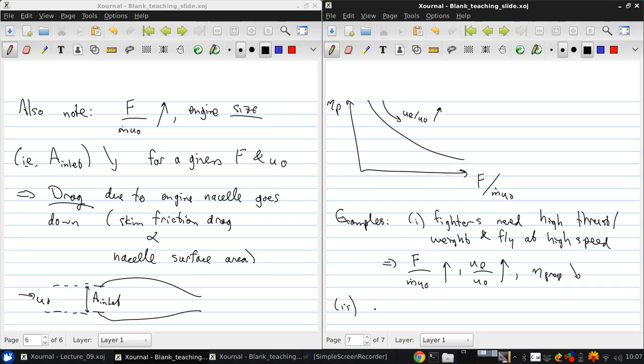Another example is a transport aircraft, like a regular commercial aircraft, which has high efficiency as a requirement and flies at lower speed. So that f over m dot u0 is lower, ue over u0 tends towards 1, and the propulsive efficiency will be high.